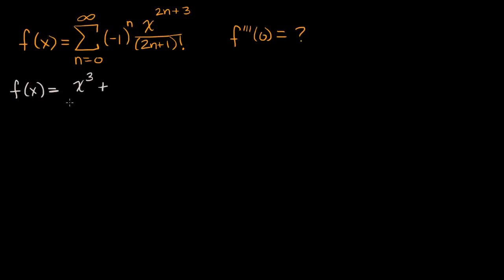Then the next term, when n is equal to one, it's going to be negative one to the one, so now it's going to have a negative out front. It's going to be x to the fifth power — two times one plus three is five — over two times one plus one, which is three factorial, so it's x to the fifth over six.